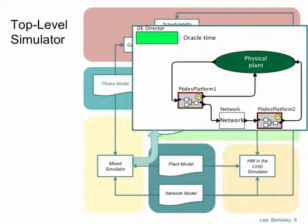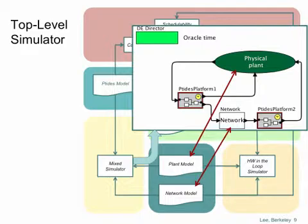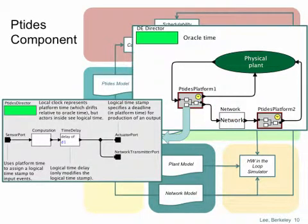The mix simulator is shown here for a simple example consisting of a physical plant, two PTIDES platforms, and a network interconnection between them. This is actually an executable Ptolemy model, where each of the components in the picture are hierarchical. For example, the physical plant itself could be elaborated using a Simulink-style model internally. The network model similarly could be elaborated using discrete event models such as might be used in network simulators like NS3. The PTIDES model describes the behavior of the individual software components in the system.